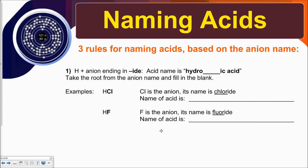There are three rules for naming acids, and it's all based on the anion name, which makes sense because we know the cation has to be hydrogen. The first type: if we have hydrogen and then an anion ending in "-ide" — the anion ends in "-ide" usually if it's a negative ion on the front of the periodic table, such as chloride or fluoride — we name these acids as hydro-blank-ic acid, taking the root from the anion name. So if the anion is chloride, the name is hydrochloric acid.